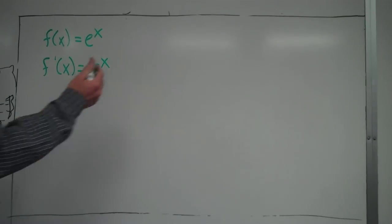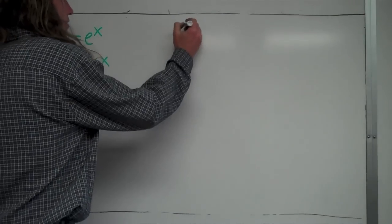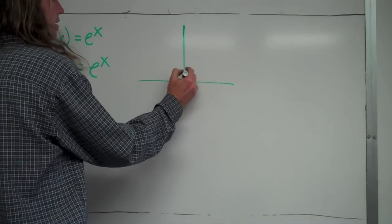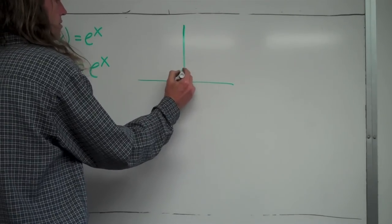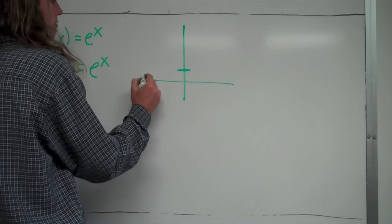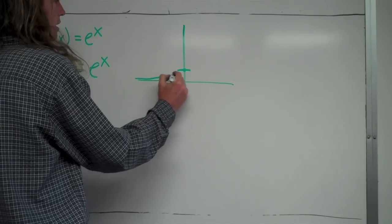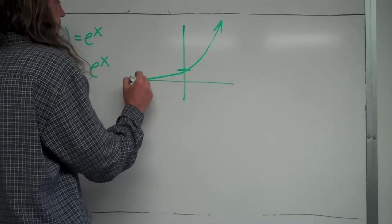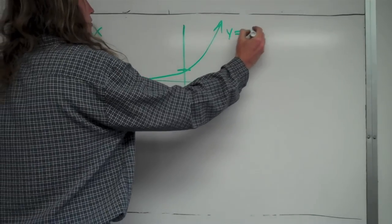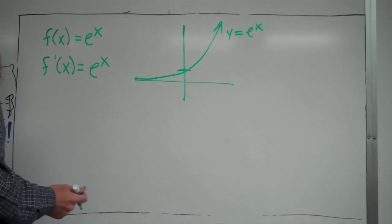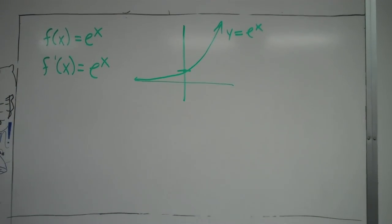So it's kind of crazy, but we should have an understanding of what the e to the x graph looks like. It passes through point zero one, and it looks like this. What that means is that any point that you choose, its slope is the same as its y value.